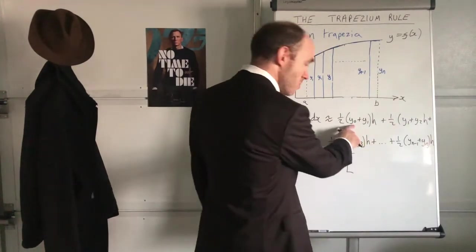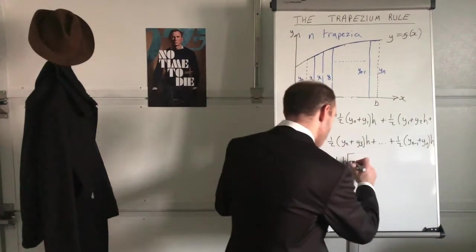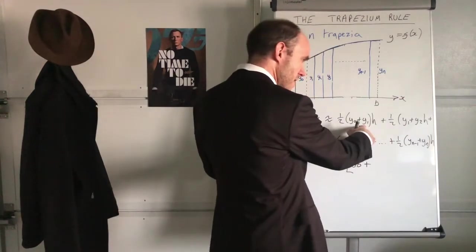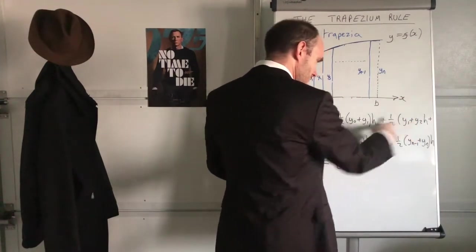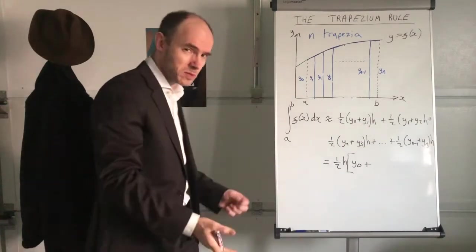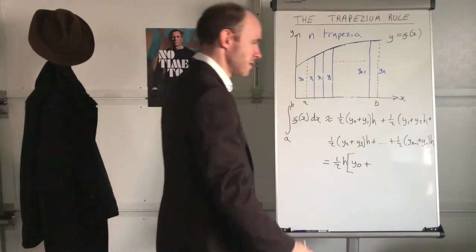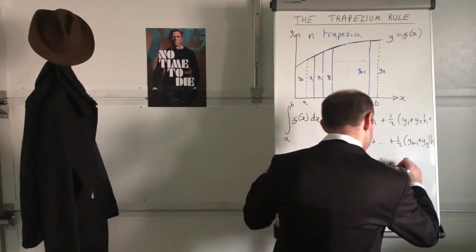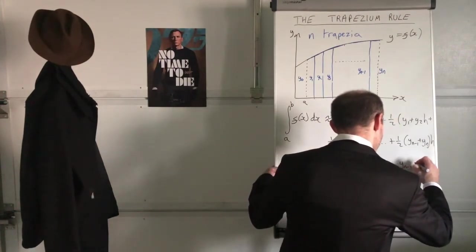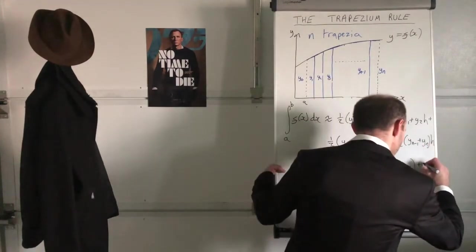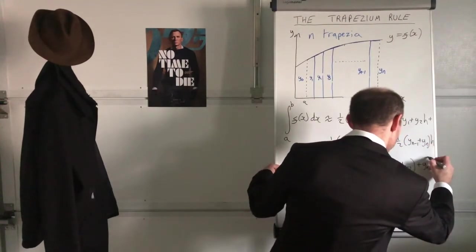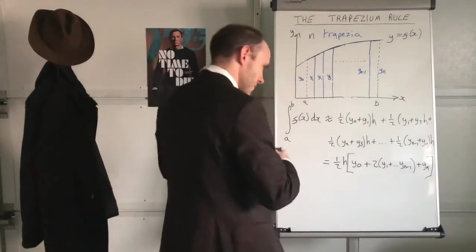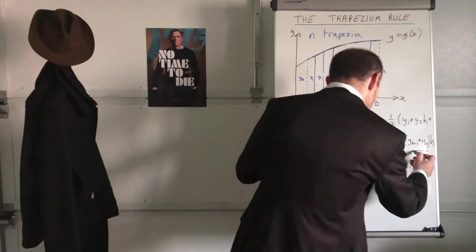Y zero appears once, doesn't it? And then what have we got? We've got y one appearing twice, y two appearing twice, y three will appear twice, all the way up to, what's the last term that will appear twice? Yeah, y n minus one. So two y one plus up to y n minus one, and then the last term, y n appears once, doesn't it. And I'm kind of pleased because I managed to fit all of that onto one line. That is your trapezium rule formula.